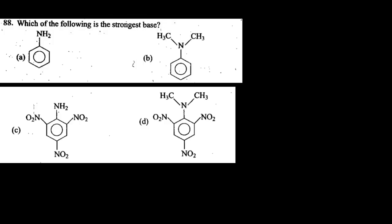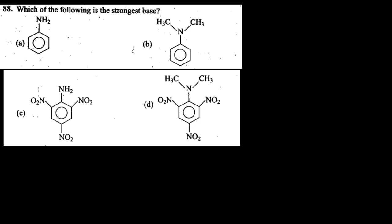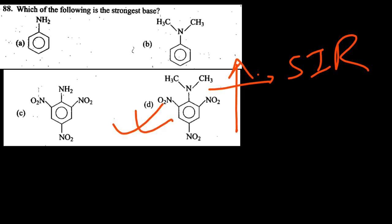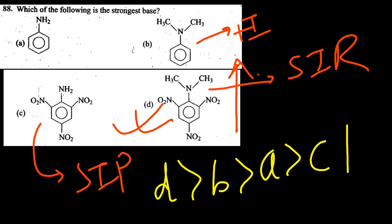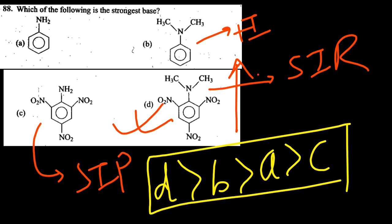Next question: which of the following is the strongest base? Here SIR is operating which decreases basic strength greatly. Here SIP (steric inhibition of protonation) is present. For inductive effect plus I - basic strength is preserved. If you arrange in order of increasing basic strength: D is most basic, then B, then A, then C.